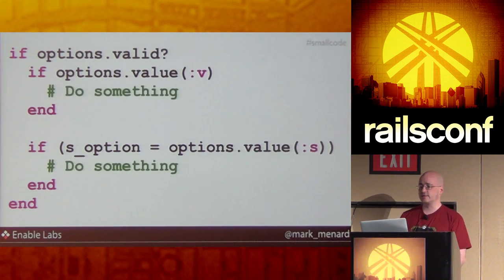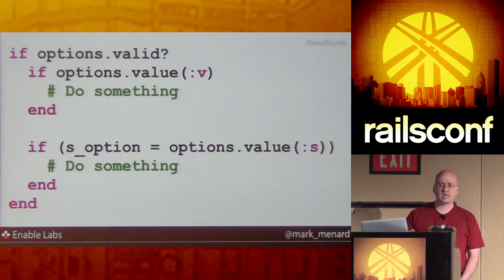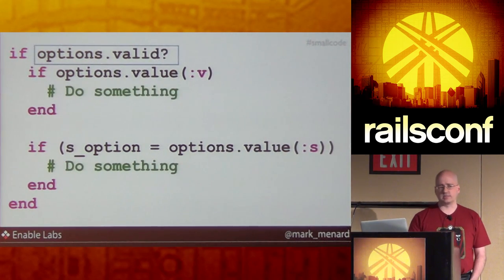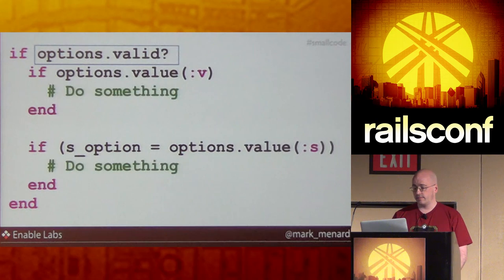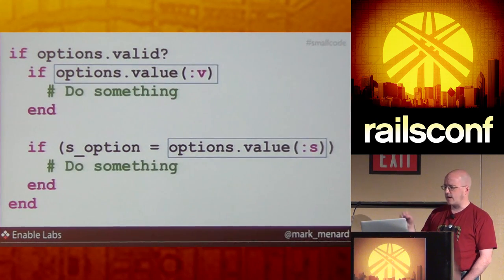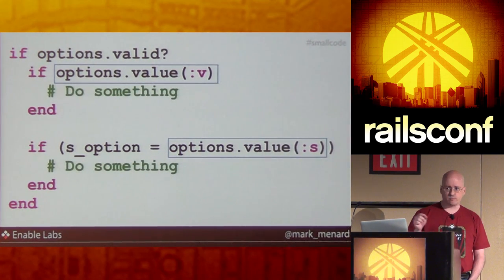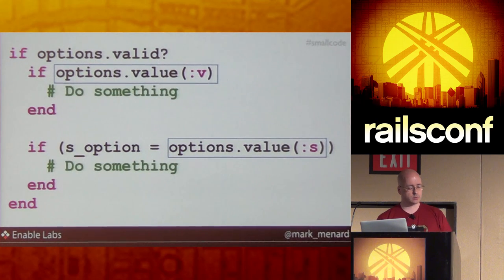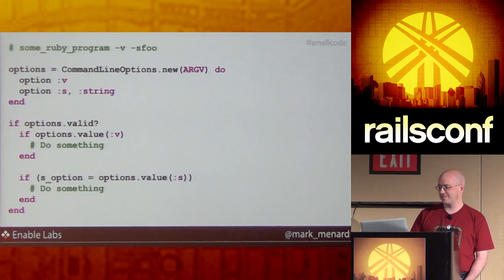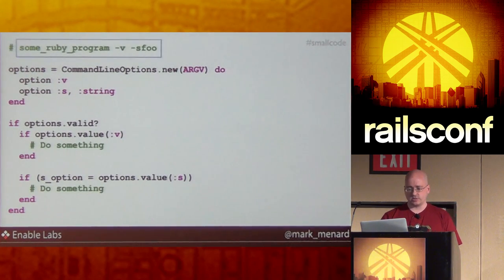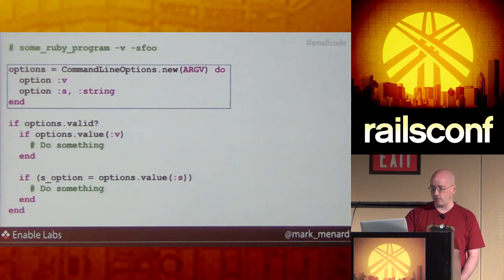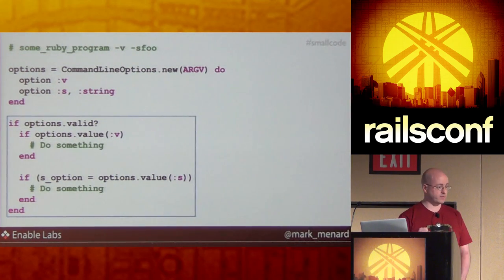A string option is a little different than a Boolean — it actually requires content. So now I need the concept of validation. If a string option is missing content, it's not valid. Then I'm going to normalize how I get the values out of both string options and Boolean options — a 'value' method. This is a change to the API, but sometimes you actually need to break the API to enable the future. I've only got one person in my office using the library at the moment. Putting it all together, I define the options with the DSL and use 'valid' and 'value' methods to find out if it's valid and get my values out.